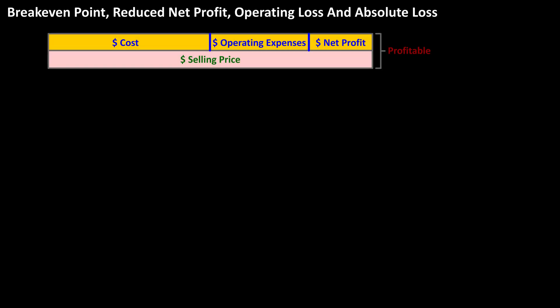Here is a chart, and on the top are sections for Cost, Operating Expenses, and Net Profit. On the bottom is Selling Price, which ideally will cover the Cost, Operating Expenses, and Net Profit.